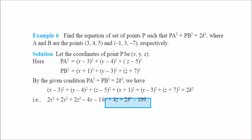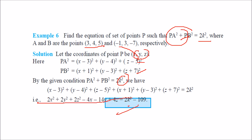Next: find the equation of the set of points P such that PA² + PB² = K². Let P be (x, y, z). PA is the distance from (x, y, z) to (3, 4, 5), and PB is the distance from (x, y, z) to (−3, 3, 7). Add both squares and equate with 2K². Collecting x, y, z terms on one side and constants on the other gives the required equation. This was the first part of 3D geometry. Thank you.